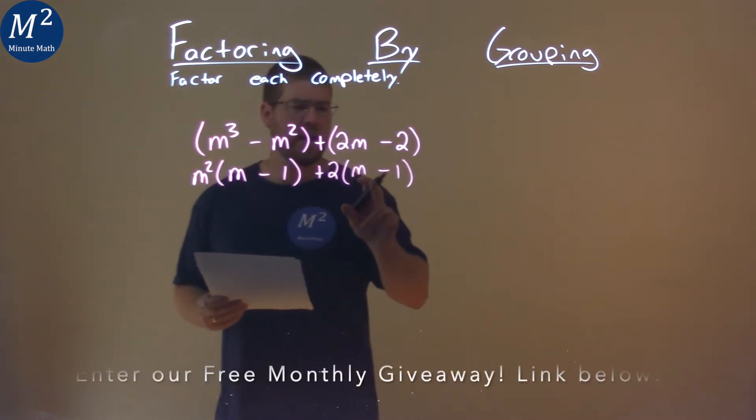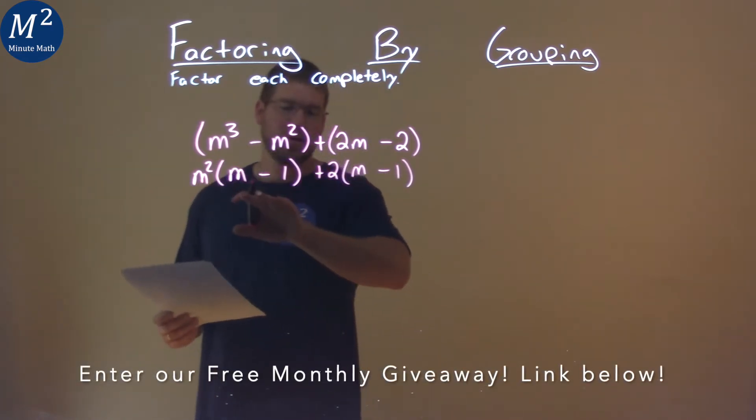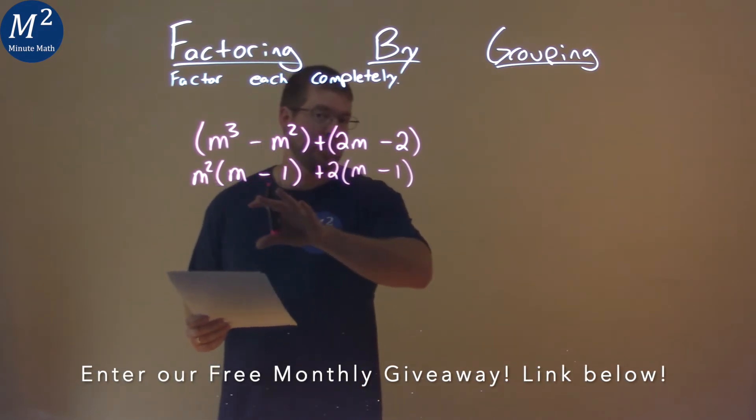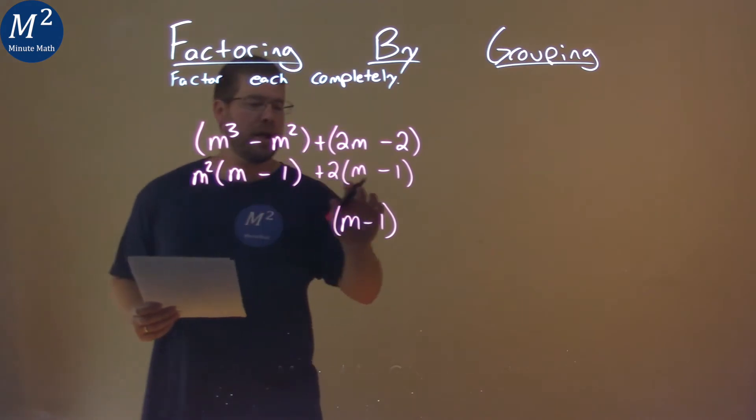Now what do you notice? We have an m minus 1 and an m minus 1. That's the goal. We have an m minus 1, m minus 1. If we pull that out, pull out that m minus 1,